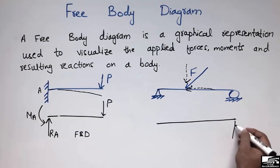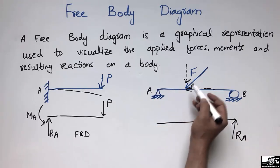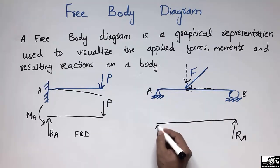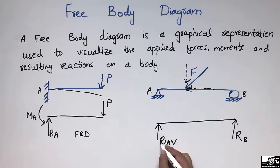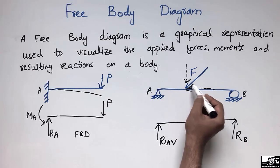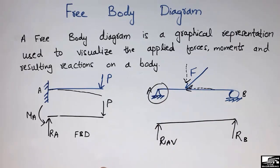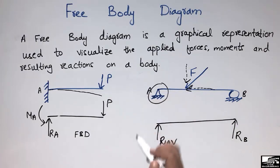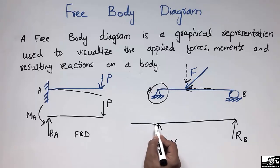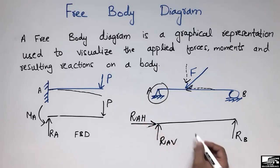The roller support can only resist the vertical component, so I call the vertical reaction at the roller support RB. The hinge support resists both vertical and horizontal components. The vertical component at the hinge is RA vertical, and the horizontal component of the inclined force is resisted only by the hinge support, giving us RA horizontal. So this is the free body diagram for the beam with an inclined load.